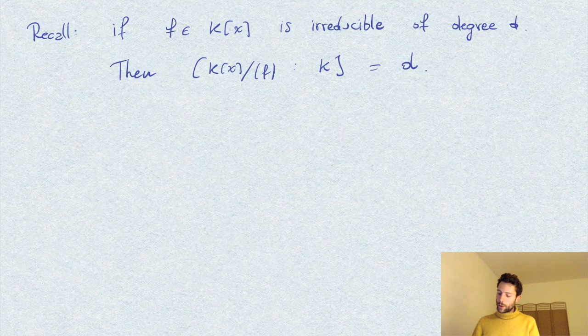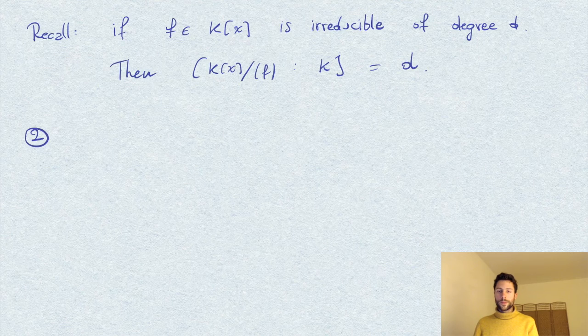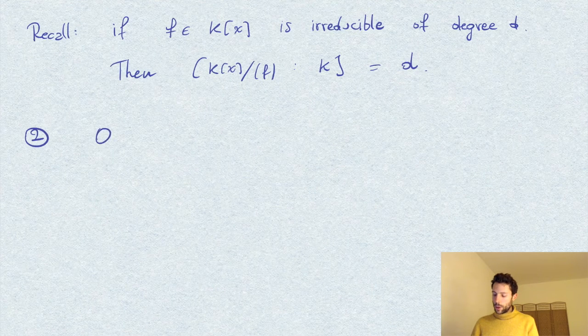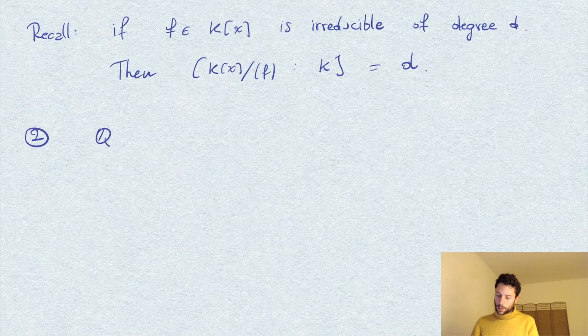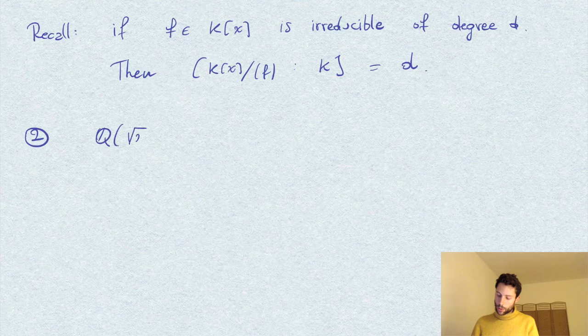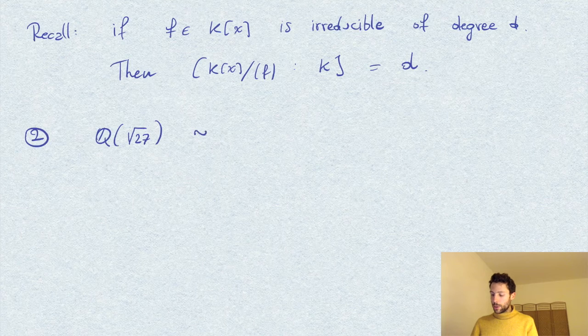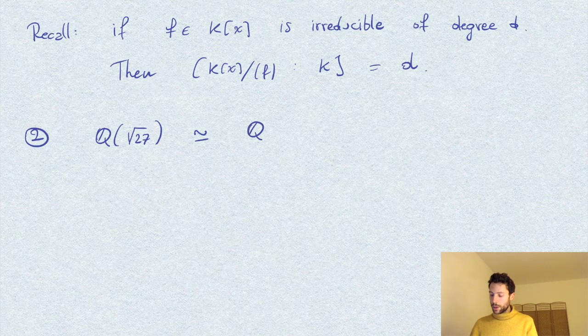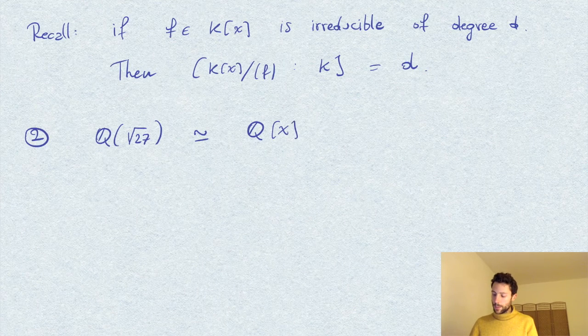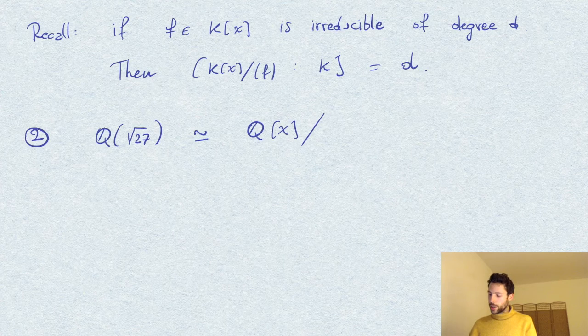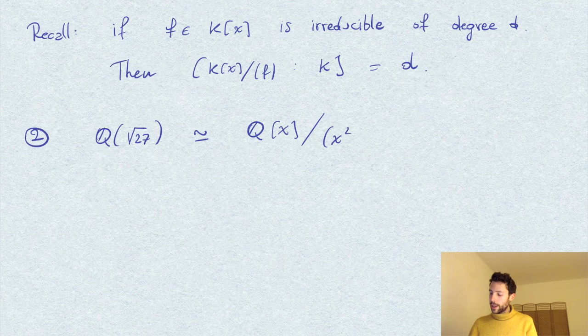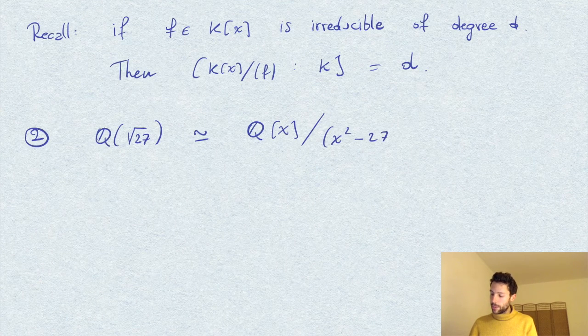So this is what we're going to use to show that Q extended to square root of 27 is, of course, isomorphic to the quotient Q[x] by the ideal generated by the polynomial x^2 - 27.